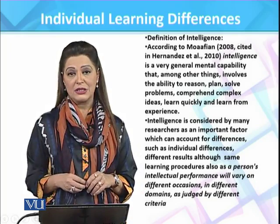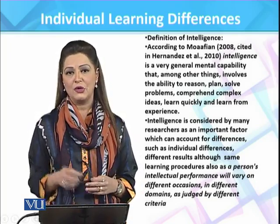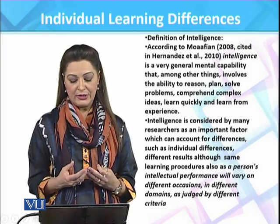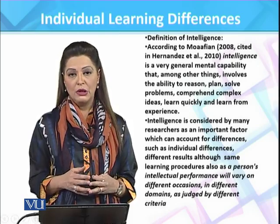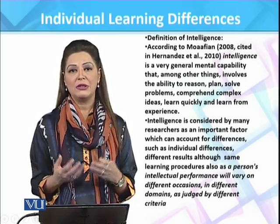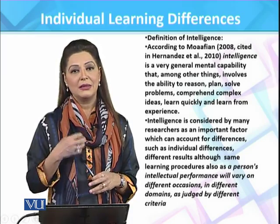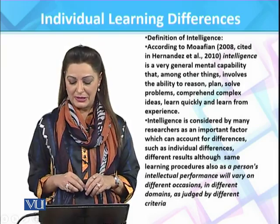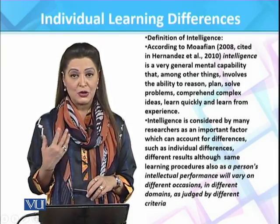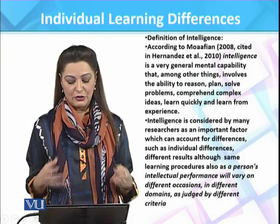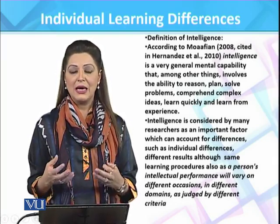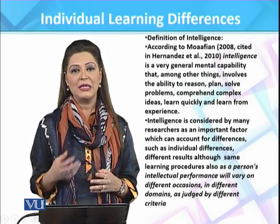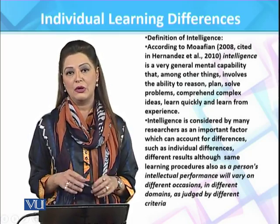Intelligence is considered by many researchers as a very important factor which can account for differences. The core area behind intelligence is the differences among learners. Sometimes individual differences can lead to the production of different results, even when all learners have followed a similar process. That is the area where intelligence comes in, as a person's intellectual performance will vary on different occasions, in different domains, and as judged by different criteria.